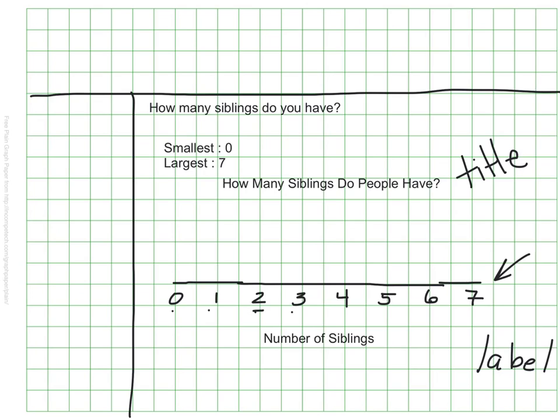The last thing that we need is a symbol to represent our data. And I'm going to use Xs. I use Xs most of the time. So let's just say that two people said they had zero siblings. There were three people who said they had one. One person had two siblings. No one had three or four. So those are left blank. One person had five. No one had six. And let's just imagine that four people said they had seven siblings.